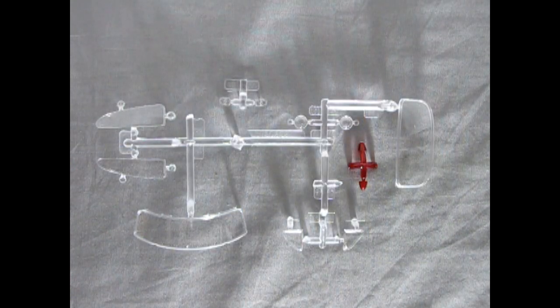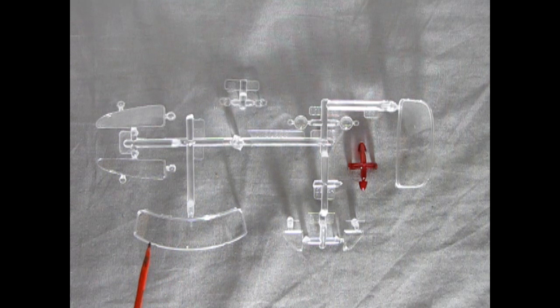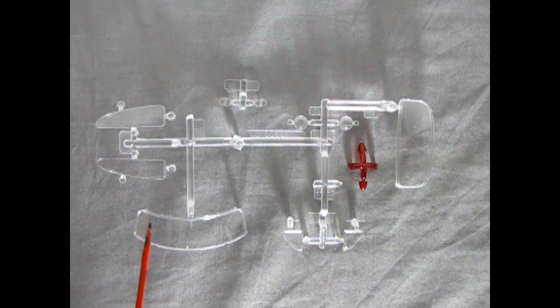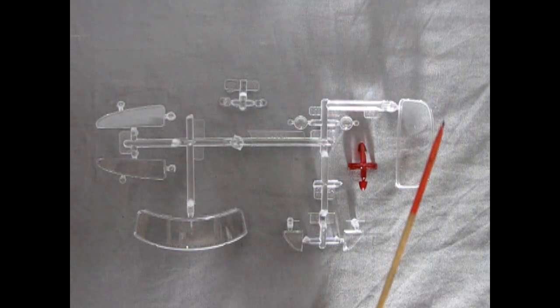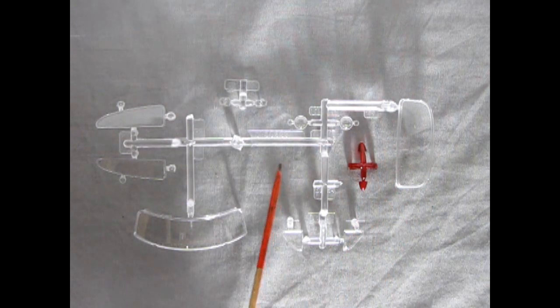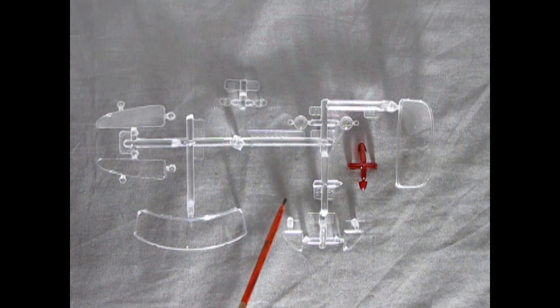Here we have all our glass components and Mobius did something a little bit different on this kit that most model manufacturers don't do. But this approach is quite nice. They have left a lip around each of the glass components that you can add bare metal foil onto before you put them in the body. So the actual body does not have the window trim around it. It's right on the glass.